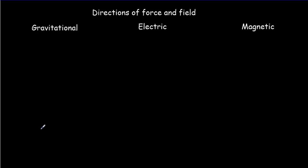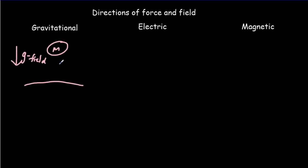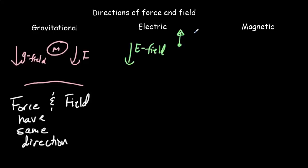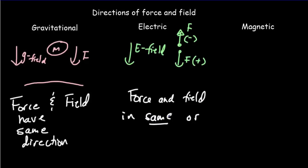Now let's compare the directions of the force to the field for the gravitational, electric, and magnetic fields. Starting with gravity: on the surface of the Earth, the G field points down and the force on the mass is also down. So for the gravitational field, force and field have the same direction — the simplest case. For the electric field, if the E field points downward, the force could be upward if you've got a negative charge, or downward if you've got a positive charge. So in the case of the electric field, force and field are in the same or opposite directions.